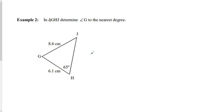Now for this one, we want to find angle G. But to do that we need to actually find the opposite side to G first. Actually, if I find angle J, I'll have two angles on my triangle and can solve for uppercase G without having to solve for little g. So for this one I'm going to solve for an angle first.